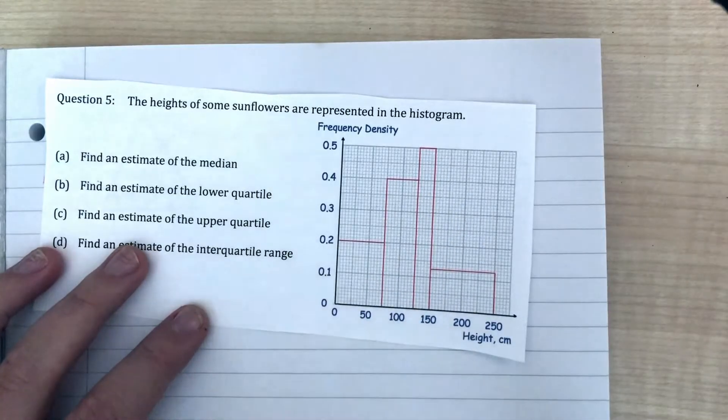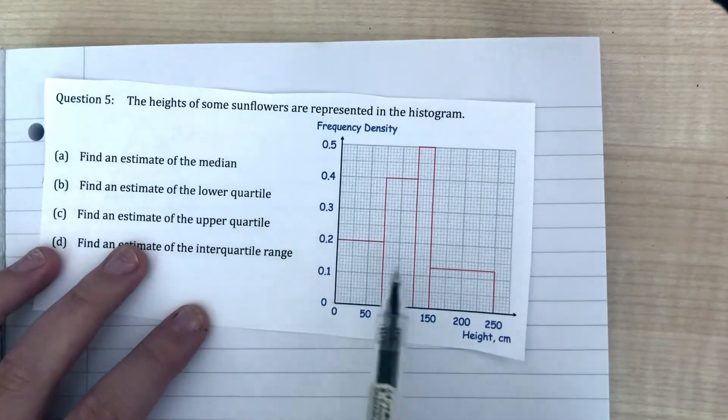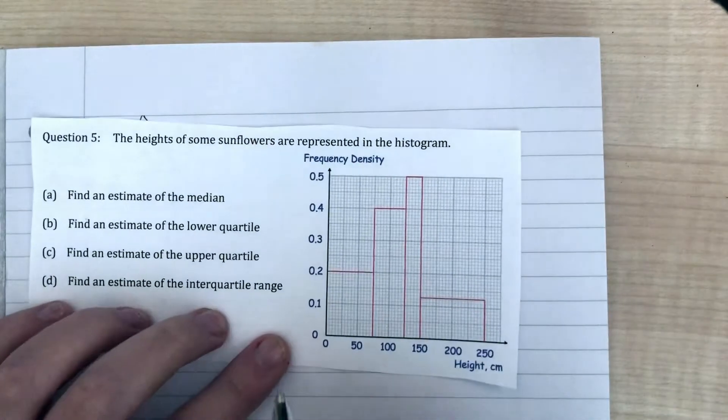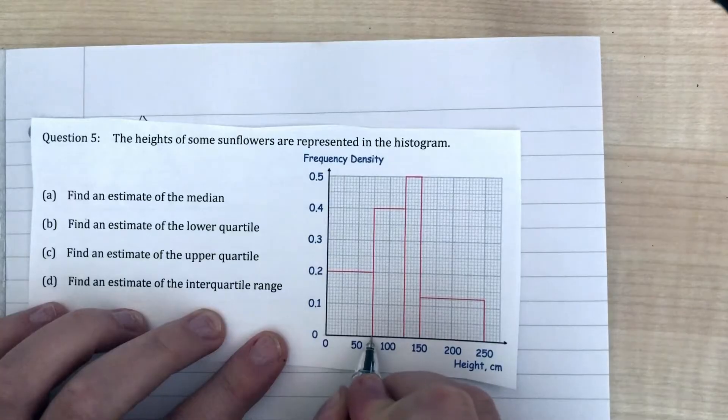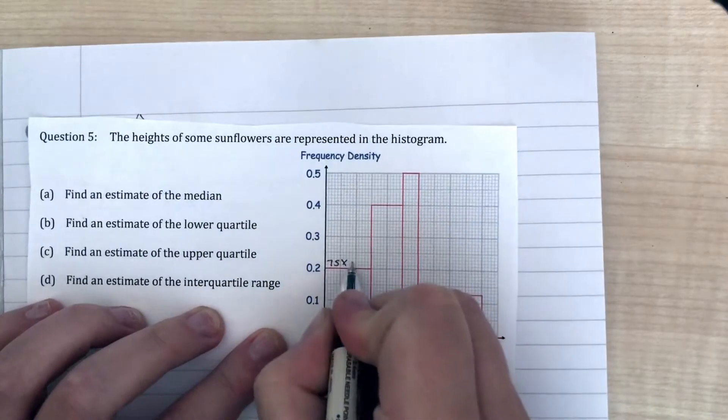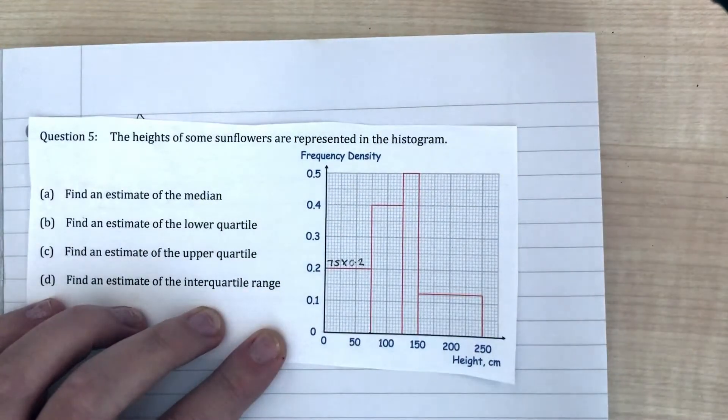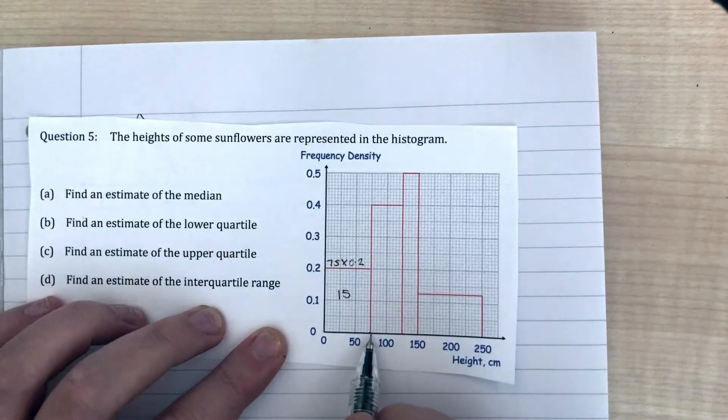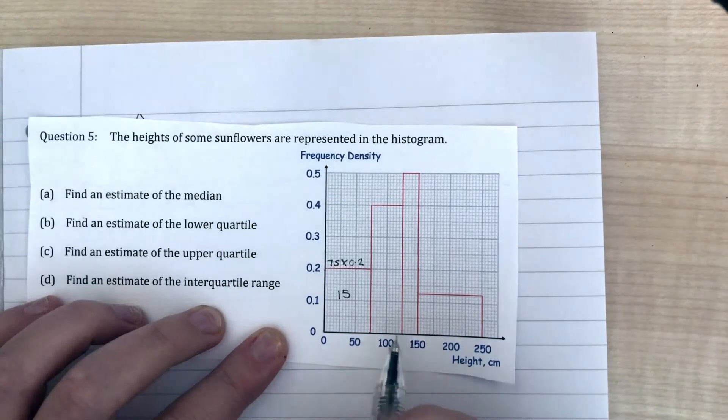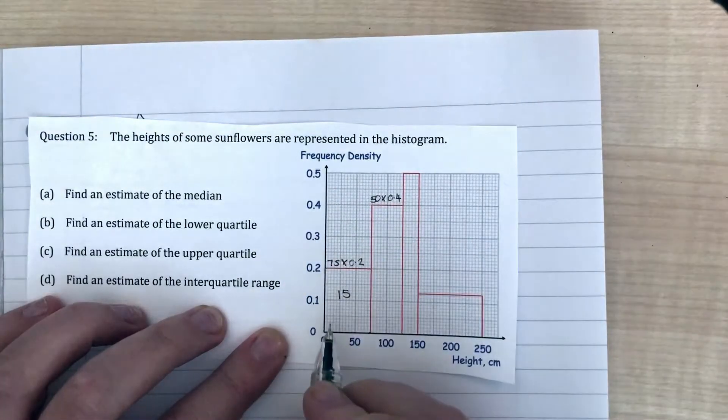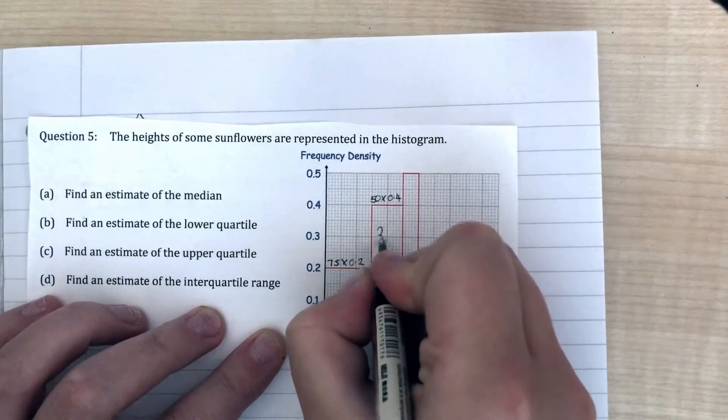To work out frequency I do frequency density multiplied by the class width. The class width here is 75, so 75 times my frequency density of 0.2 is 15. We've got 15 sunflowers in that block. The class width here is 50, and my frequency density is 0.4. So 50 times 0.4 means there are 20 sunflowers in that block.